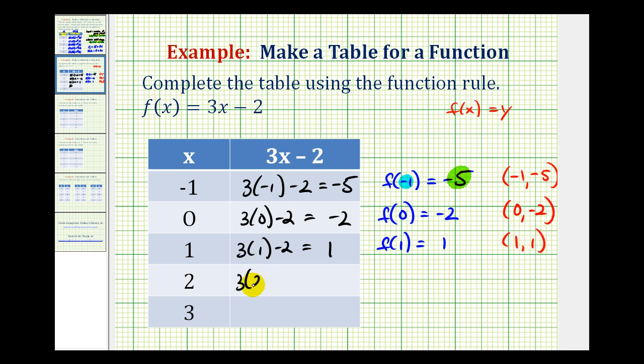And x is 2. We have 3 times 2 minus 2. So 6 minus 2, that's 4. So f(2) = 4, which means the graph of the function would contain the point (2, 4).